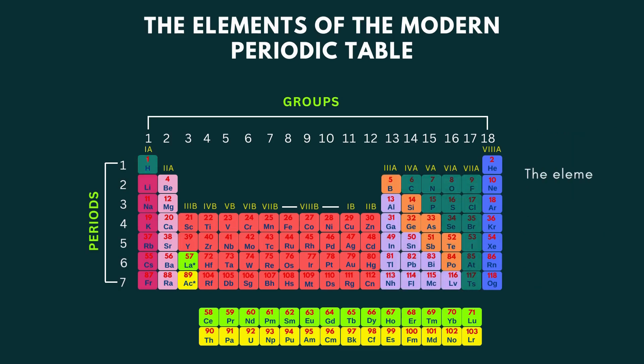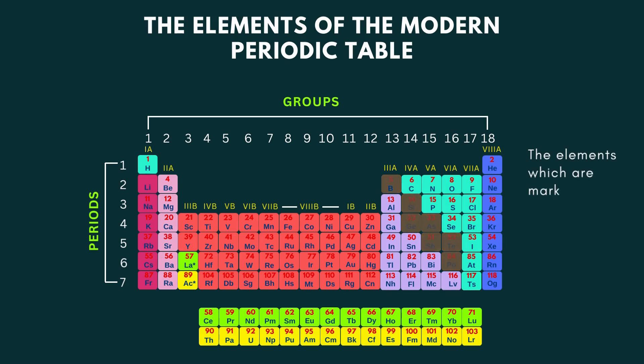Those elements marked by the light blue color on the table are known as non-metals. The elements which are marked under orange color—boron, silicon, germanium, arsenic, antimony, tellurium, and polonium—are called metalloids.